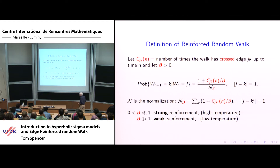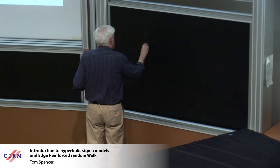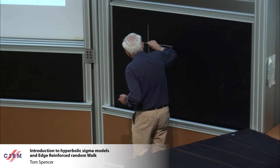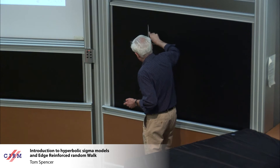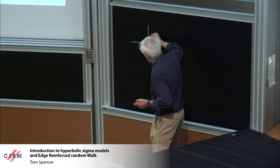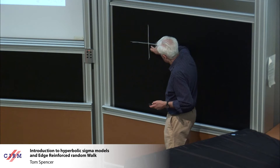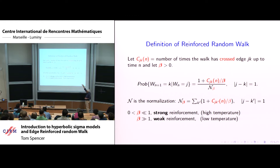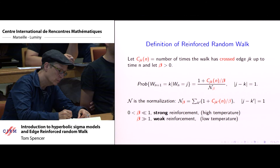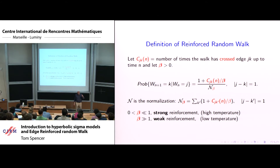Just to make sure the definition is clear: suppose I'm in two dimensions at some site. I have a counter for each neighboring edge counting how many times I've visited it — maybe zero, maybe several times. If all edges are equally weighted, I just pick one at random. But if one has been visited more often, I'm more likely to take that one by this linear reinforcement. If beta is very large, the number of times you've crossed a particular edge is somewhat suppressed by a factor of beta, so the reinforcement matters less. If beta is small, it would be quite important how many times I've crossed those edges.